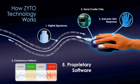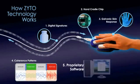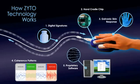The data received from the hand cradle is plotted and analyzed for coherence. Each response is given a positive or negative score called a deviation ratio, or DR.